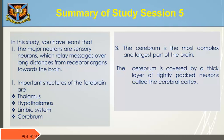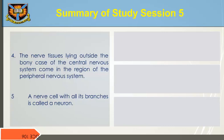Summary of Study Session 5: In this study session, you have learned that the major neurons are sensory neurons which relay messages over long distances from receptor organs towards the brain. Important structures of the forebrain are the thalamus, hypothalamus, limbic system, and cerebrum. The cerebrum is the most complex and largest part of the brain, covered by a thick layer of tightly packed neurons called the cerebral cortex. The nerve tissues lying outside the bony case of the central nervous system come in the region of the peripheral nervous system.